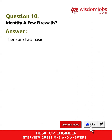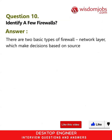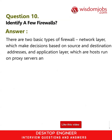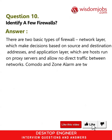Question 10: Identify a few firewalls. Answer: There are two basic types of firewall — network layer, which makes decisions based on source and destination addresses, and application layer, which are hosts run on proxy servers and allow no direct traffic between networks.